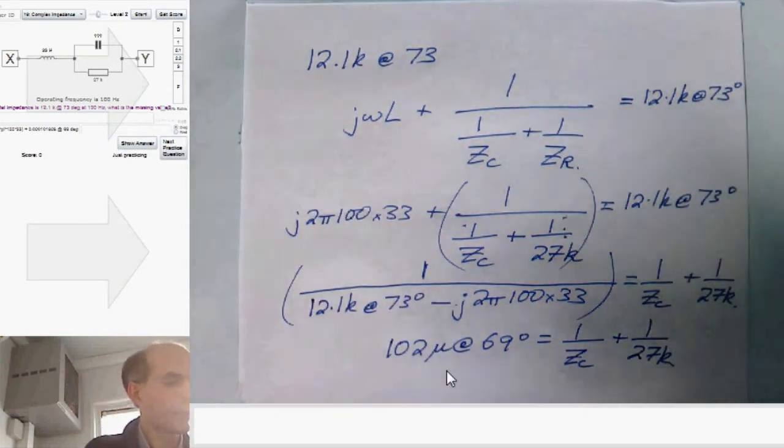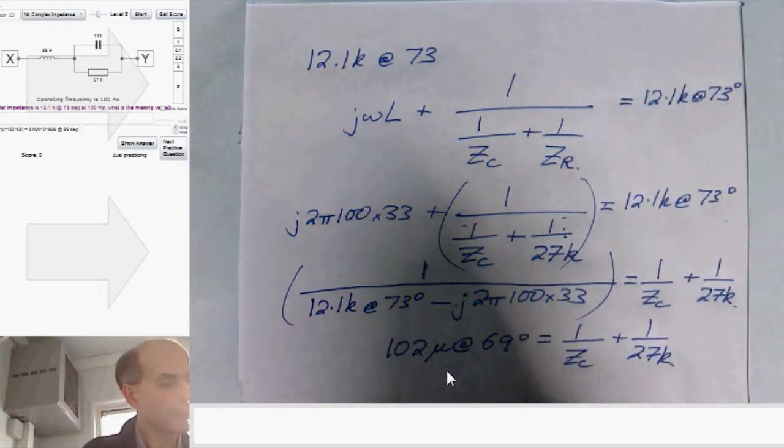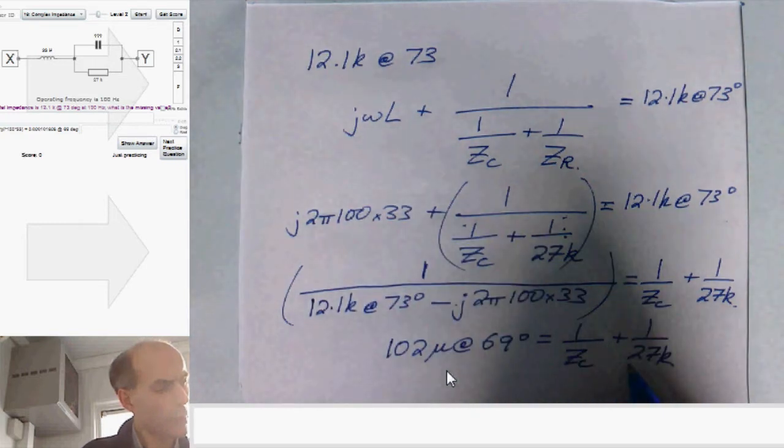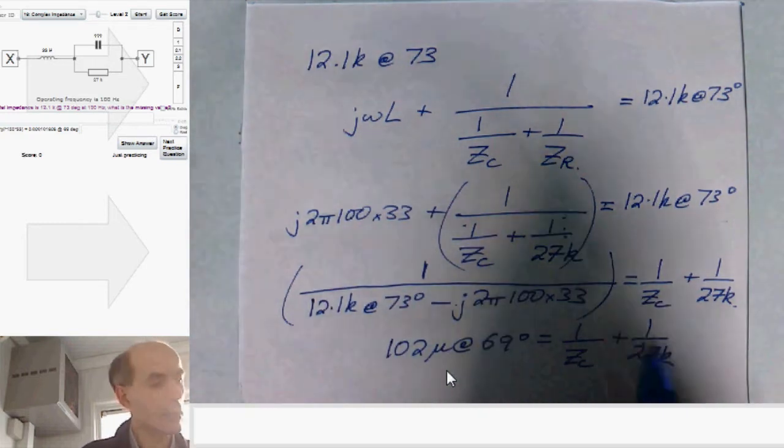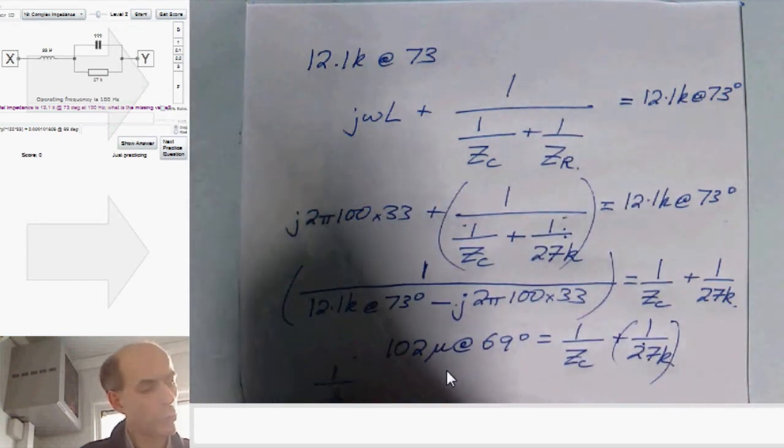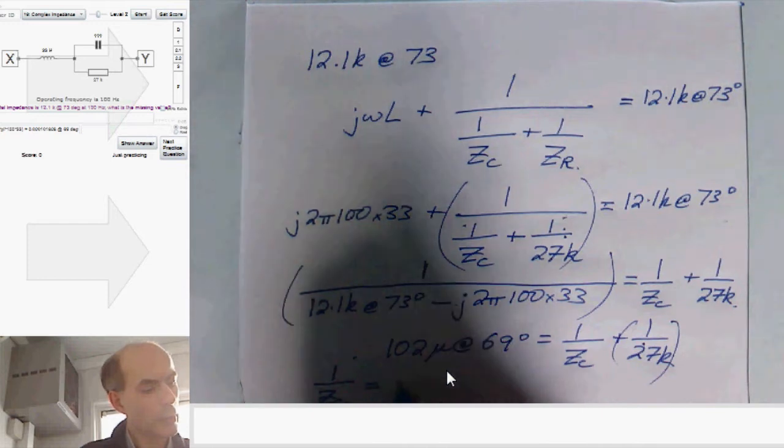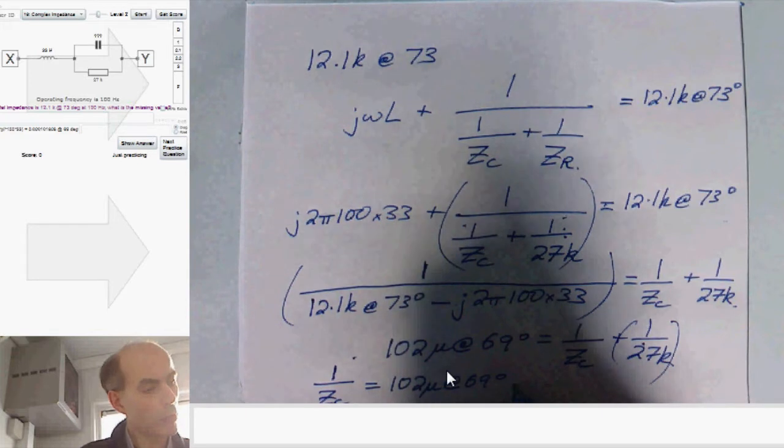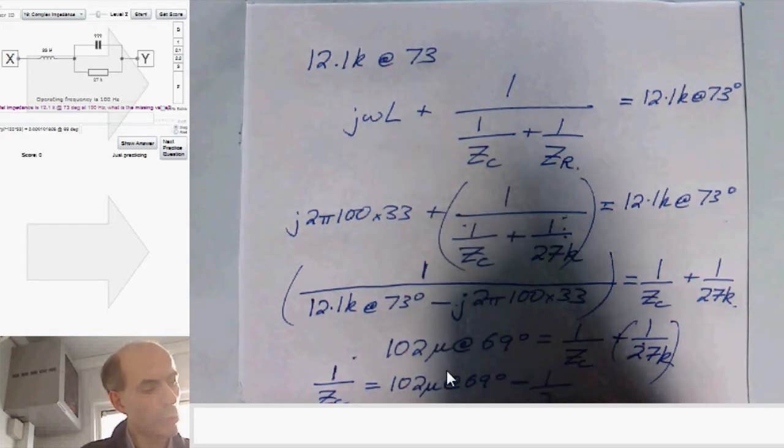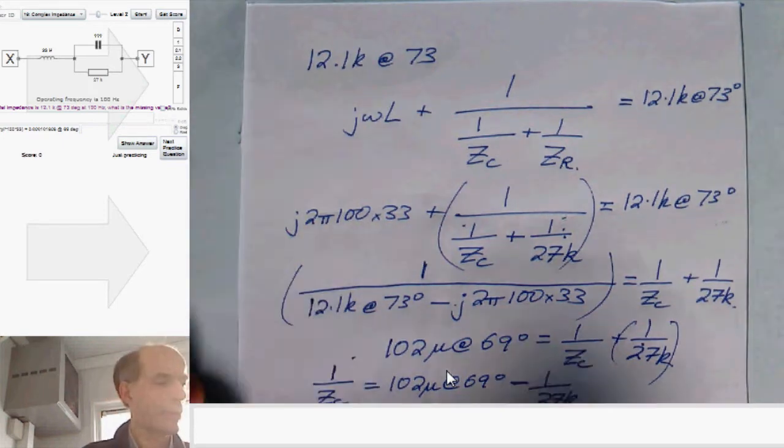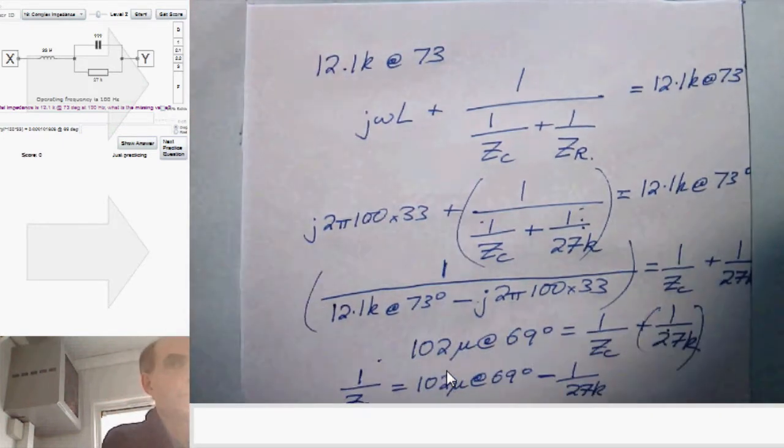Next, this sum at the bottom here I've got to try and work out. And that I can most easily do by taking the 27k here across to the other side. And then I would write 1 over ZC is 102 micro at 69 degrees minus 1 over 27k. And that's fairly easy to work out.